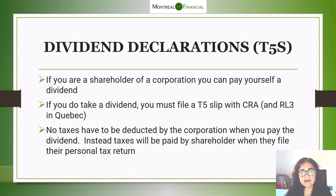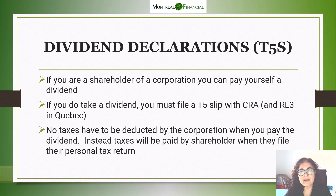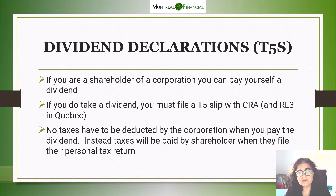When you take a dividend, you report the amount that you withdrew from the corporation, but the corporation does not have to deduct any taxes. Instead, the shareholder who receives the T5 will report the dividend amount on their personal tax return and will pay taxes there. There are a lot of discussions on whether you should take a salary or dividend, and I will be doing a video on this in the future.